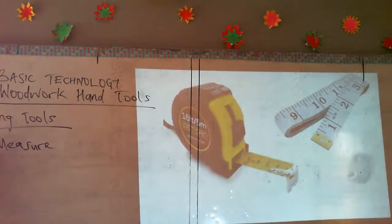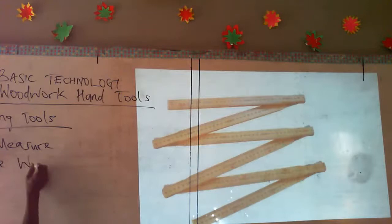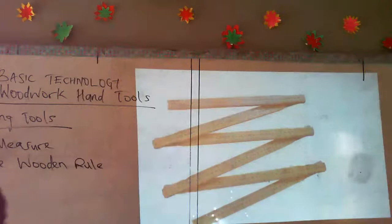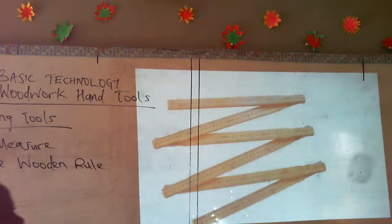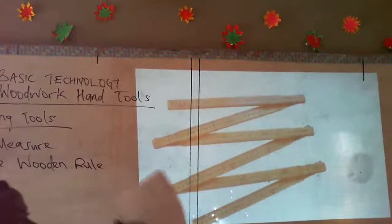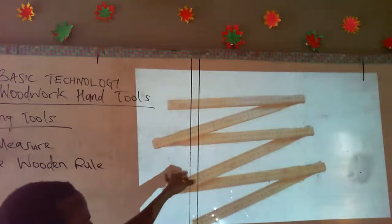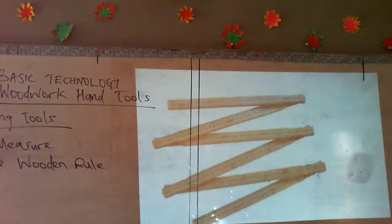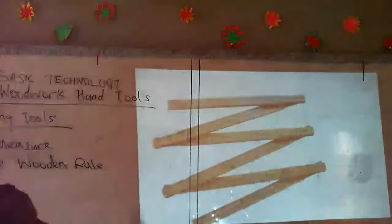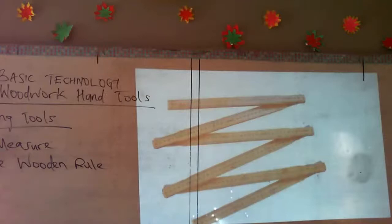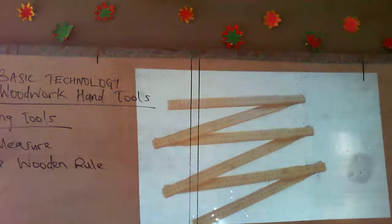The next measuring tool is the foldable wooden rule. This is another measuring device made of straight wood in the form of a ruler, though thicker than a typical ruler. It is also calibrated and is foldable in length — you can fold it and keep it in your pocket or hang it wherever needed. The total length of this rule is 180 centimeters, so it is not as long as a tape measure. It is used for measuring the length, breadth, and width of wood pieces.